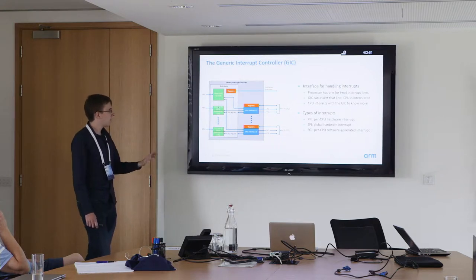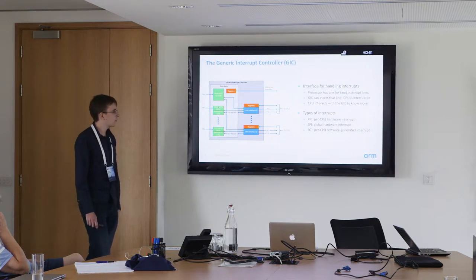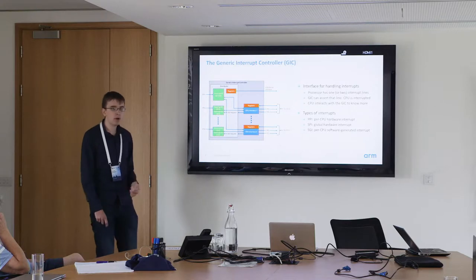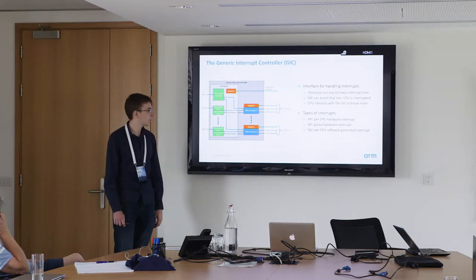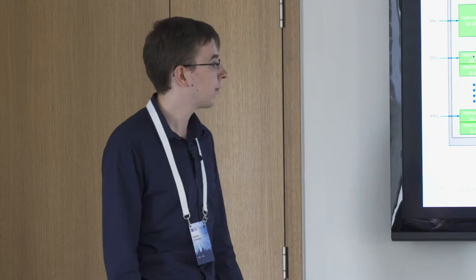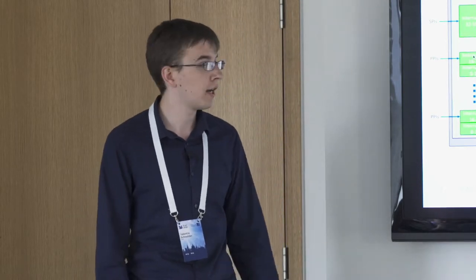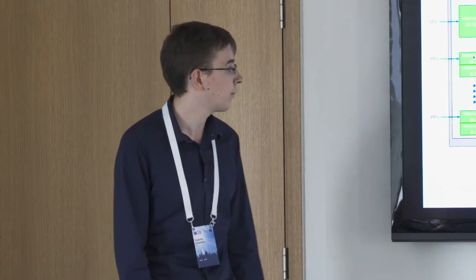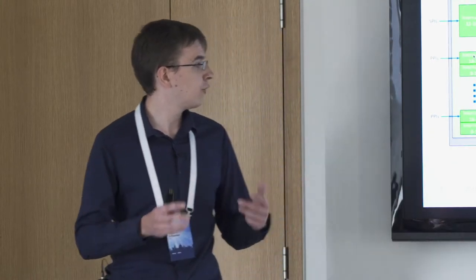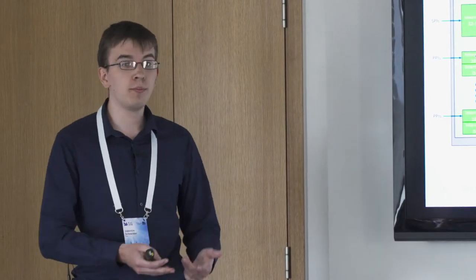For the GIC we have three types of interrupts. We have per-CPU hardware interrupts — for instance CPU timers raise this kind. We have global hardware interrupts from hardware not tied to any CPU, like a network card receiving a packet. And we have SGIs — per-CPU software generated interrupts — which are interrupts that can be triggered by the CPU for inter-processor communication.